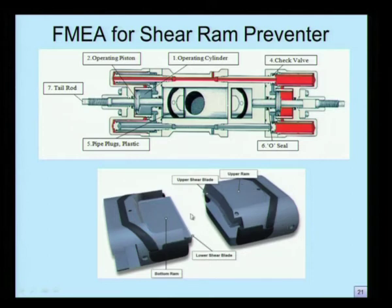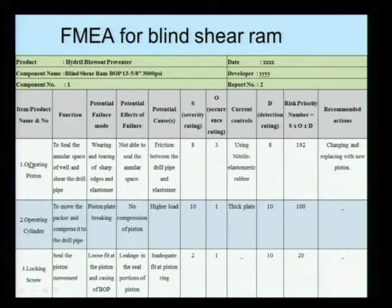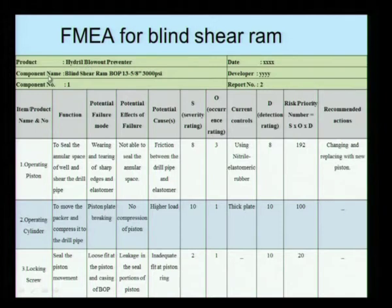Once it cuts and seals the drilling stack, it prevents the flow of hydrocarbon from subsea level to the topside — that is why it is called a shear ram preventer. Let us do an FMEA analysis for the shear ram preventer. The components are: component number 1, operating piston; number 2, operating cylinder; number 3, locking screw, and so on. The product name is Hydral Blowout Preventer. The component name is blind shear ram BOP, 13⅝ inches operating at 3000 psi pressure.